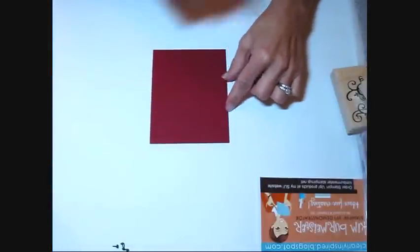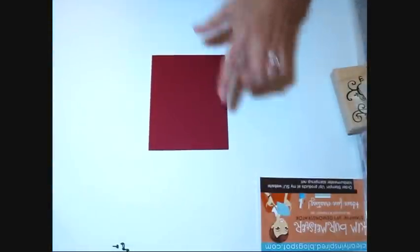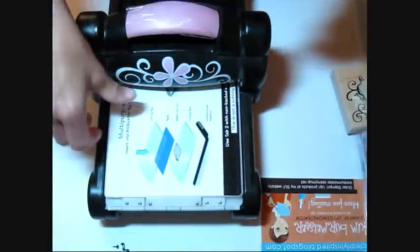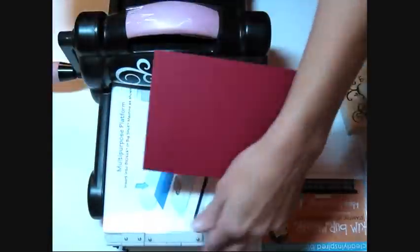You're going to need a piece of paper. Mine is cherry cobbler, and it's four and a fourth by five and a half. The first thing we're going to do is run it through the big shot to get that pattern paper on the back.